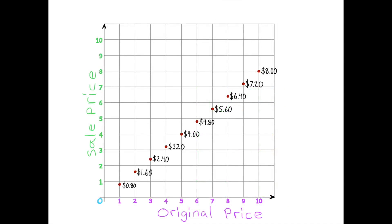Start at the zero in the bottom left-hand corner and move to the right 3 spaces, then move vertically to 2 dollars and 40 cents. Be sure to put your point just below 2 and a half, because $2.40 is less than $2.50, and $2.50 would be halfway between $2 and $3.